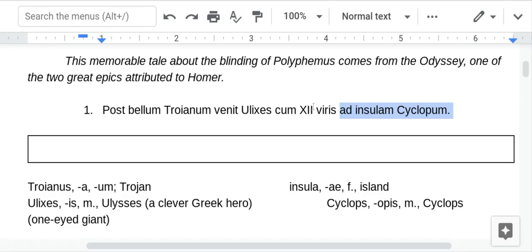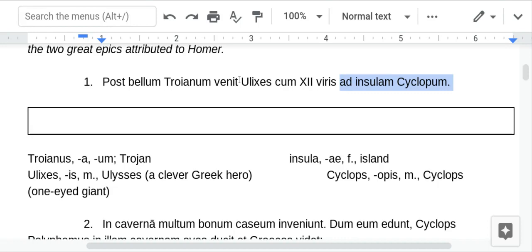But, sentence number one, after the Trojan War, Ulysses comes with twelve men to the island of the Cyclops. Not much to talk about here. Ulysses is the subject. You can tell because that matches the nominative from the vocab. And then the verb is he comes. Ulysses comes. It could be came too, but the rest of the story uses the present tense.